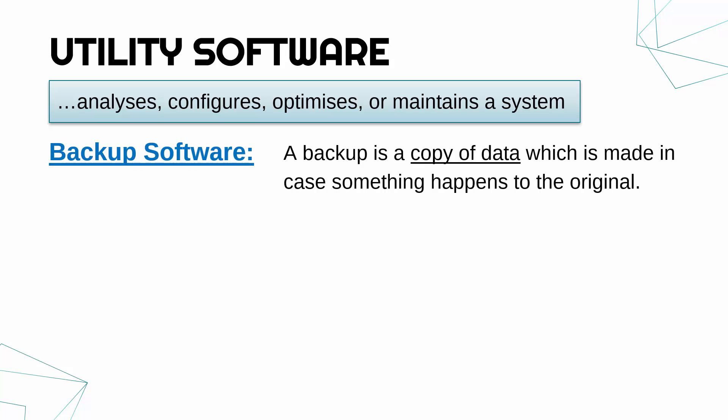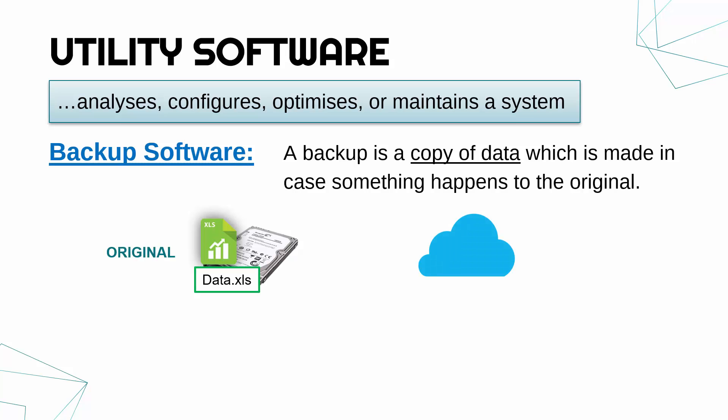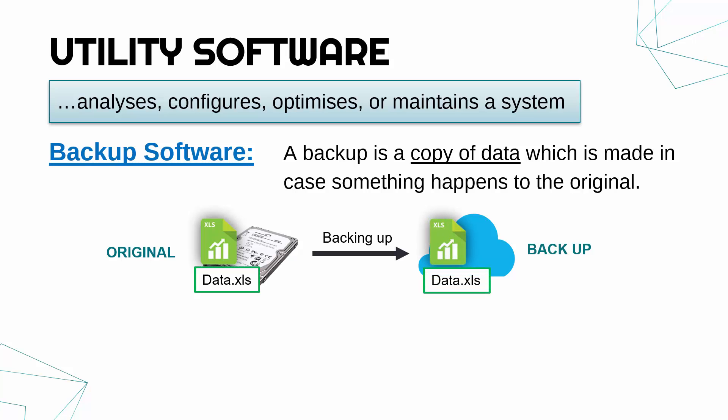Backup software is an example. Again, if we didn't have a computer we wouldn't need backup software, so therefore it is system software and not application software. Backup, as I'm sure you'll know, is a copy of data which you make in case something happens to the original. You might have a hard drive with some important files, and a backup will put it somewhere else — you might have another hard drive, or you might use cloud storage, which is quite common nowadays. Backing up the data means you make a copy and the copy goes somewhere else.